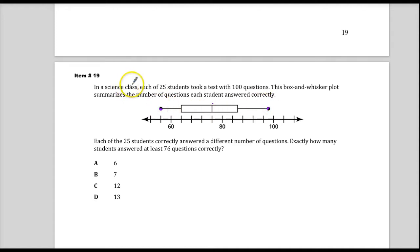The question, by the way, is in a science class, each of 25 students took a test with 100 questions. This box and whisker plot summarizes the number of questions each student answered correctly. Each of the 25 students correctly answered a different number of questions, exactly how many students answered at least 76 questions correctly.